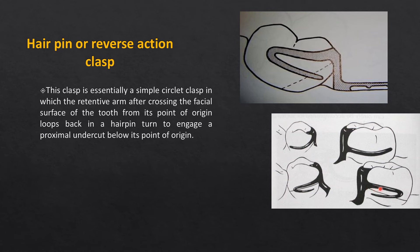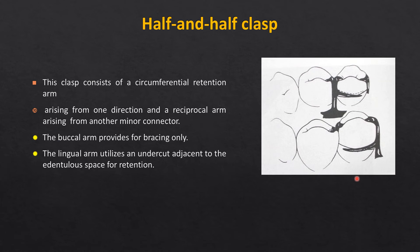A half-and-half clasp is a disjointed clasp. In all other clasp assemblies, the retentive and reciprocal arms are attached to one common minor connector. Here, however, there are two separate minor connectors — one attached to the reciprocal arm on the lingual side, another attached to the retentive arm on the buccal side. This is why it is called a half-and-half clasp. It provides good bracing action, and the lingual arm utilizes the undercut adjacent to the edentulous space for retention.